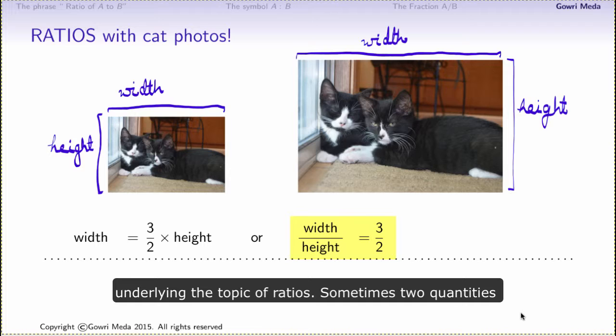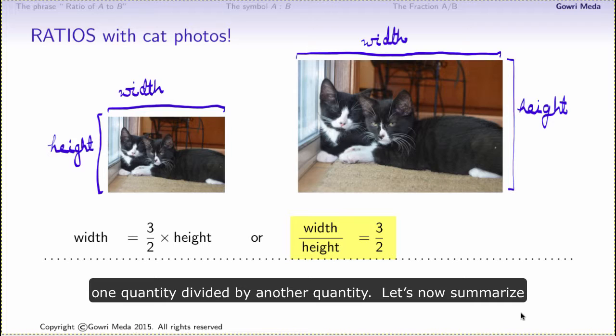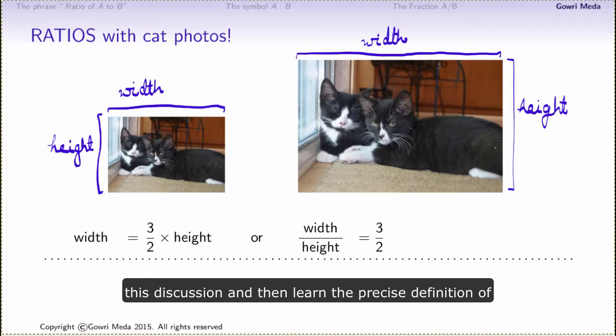Sometimes two quantities must be compared by considering the fraction of one quantity over another quantity, or said differently, one quantity divided by another quantity. Let's now summarize this discussion and then learn the precise definition of ratios.